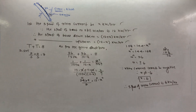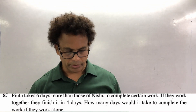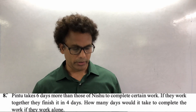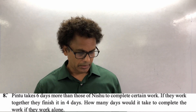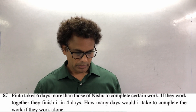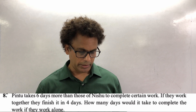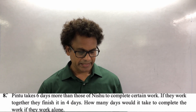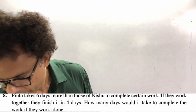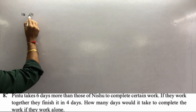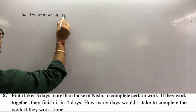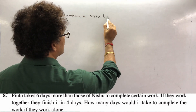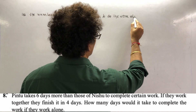Now check sum number 8 - again a very nice sum. Start is very important. Check this example: Pintu takes six days more than Nishu to complete a certain work. If they work together they will finish in four days. How many days would it take each to complete the work alone? We assume: let the number of days taken by Nishu to do the work alone be x.